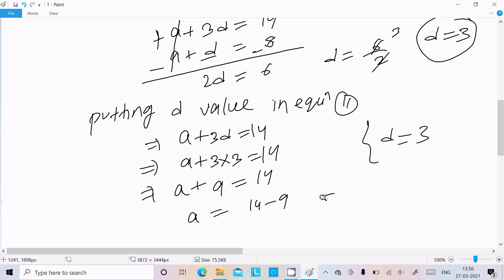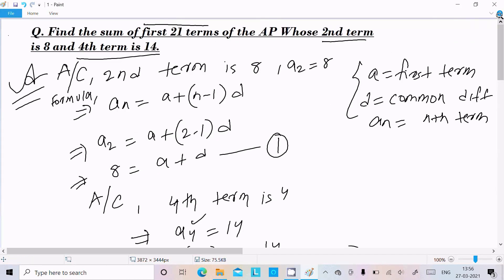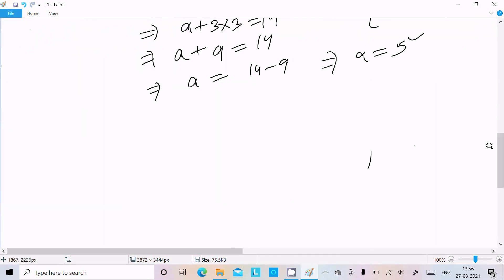Now we have found a and d, and we need to calculate the sum of 21 terms. The formula is S_n = (n/2)[2a + (n-1)d].